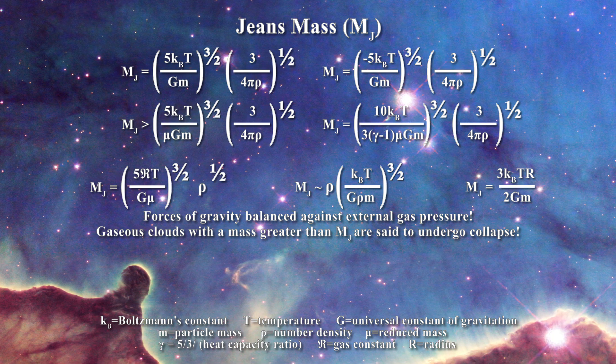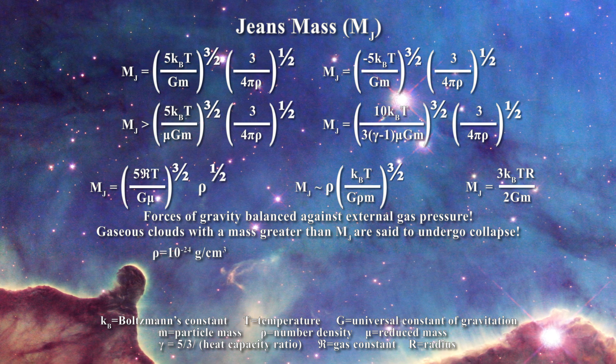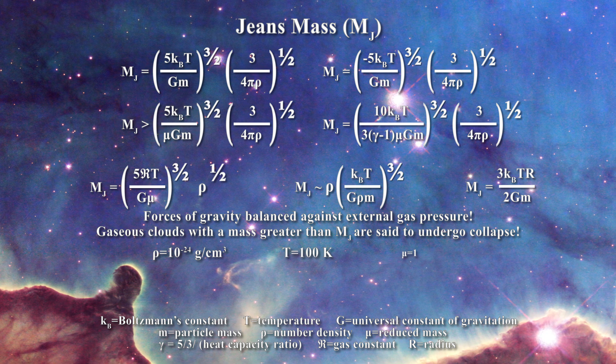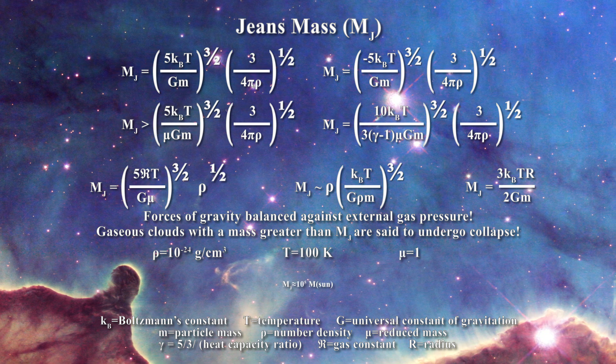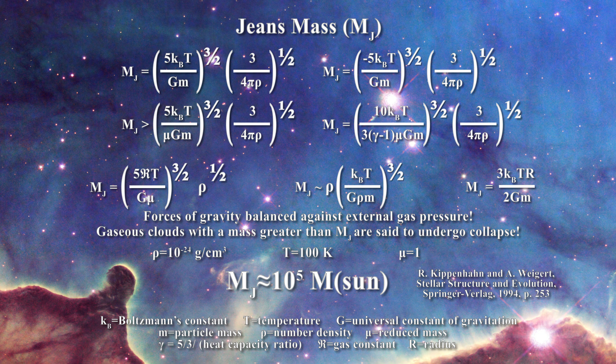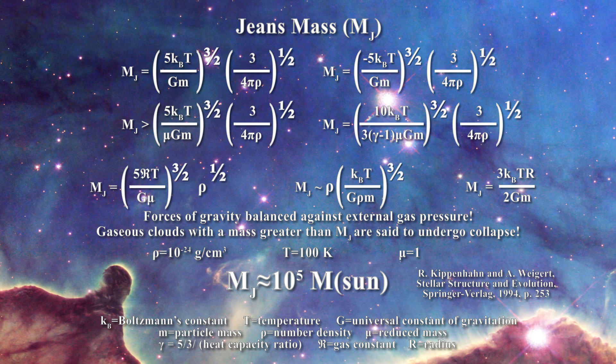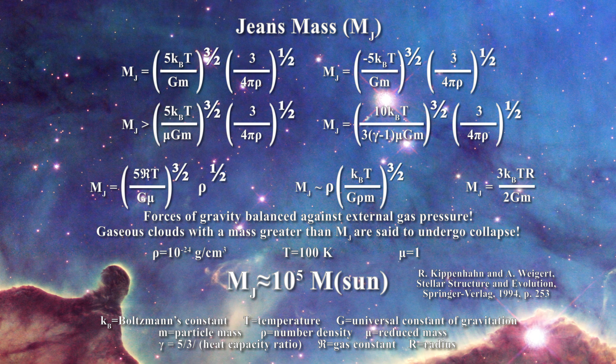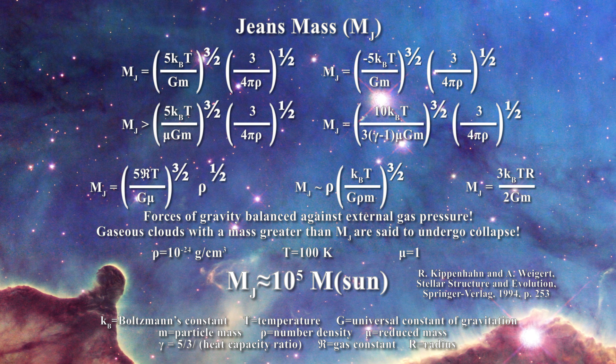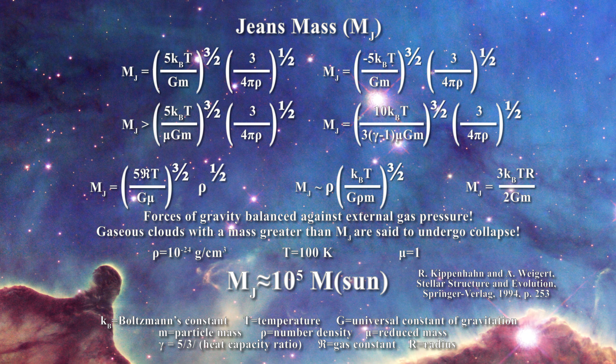Now if one considers the expected densities of a gaseous cloud in the 10 to the minus 24 grams per centimeter cube range along with a temperature of roughly 100 kelvin, then the Jeans mass works out to be about 10 to the fifth times the mass of the sun. So gaseous clouds of reasonable size to form a star actually do not collapse given the expression advanced by Jeans. The astronomers must invent some means of breaking up or fractioning the collapsing mass to get a star of reasonable size.